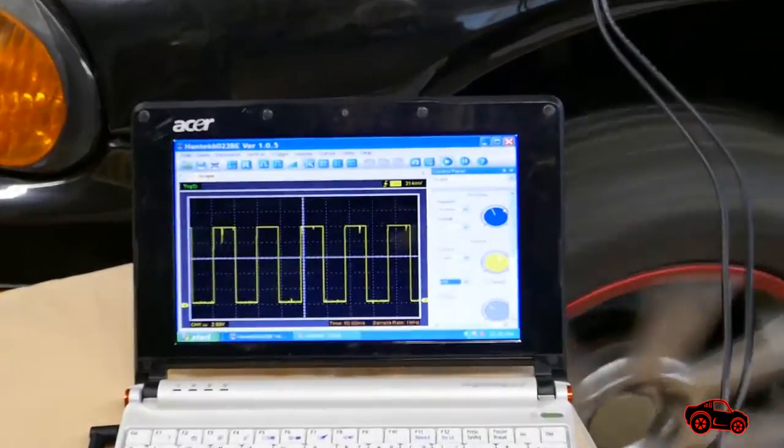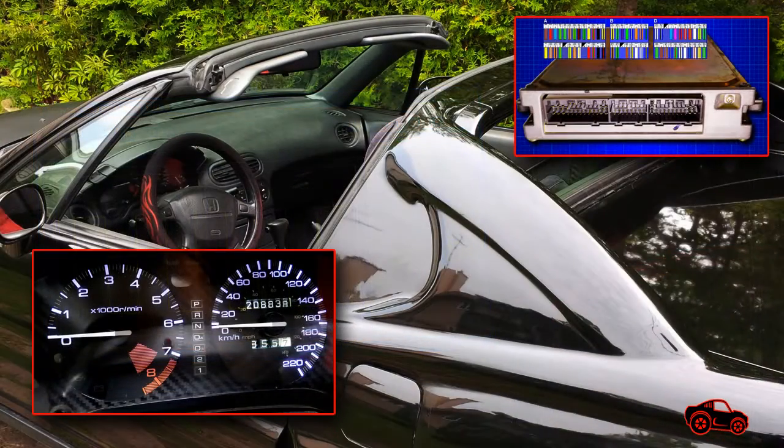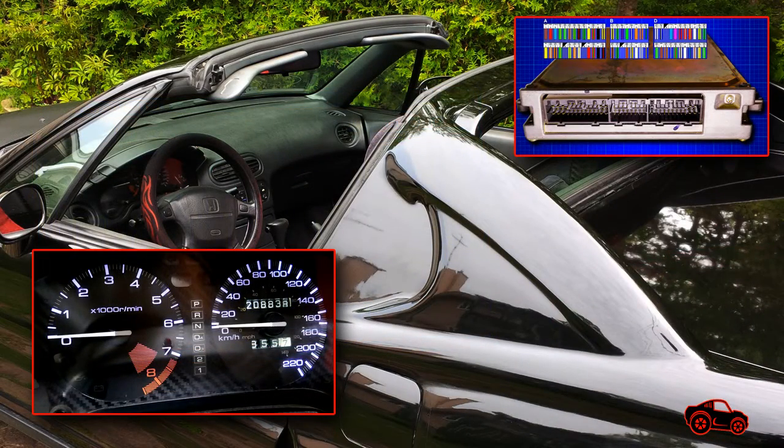So when driving, the wheels rotate and the speed sensor generates square waves. These waves can be used by the PCM, the speedometer, the cruise control system, and other modules.